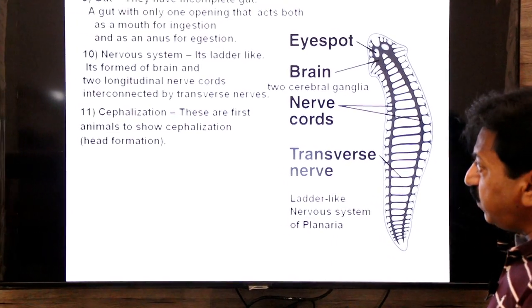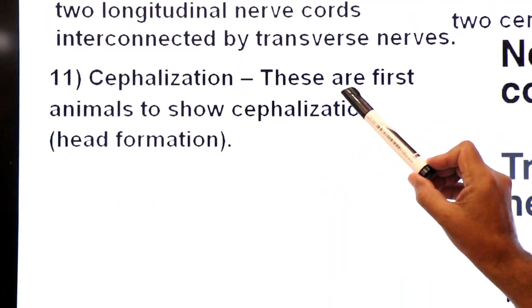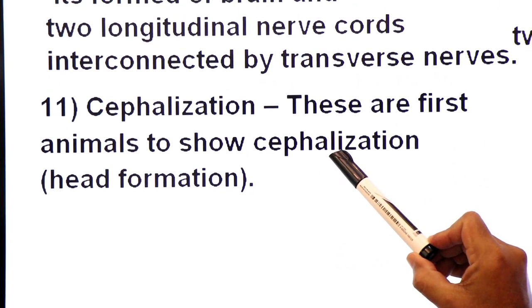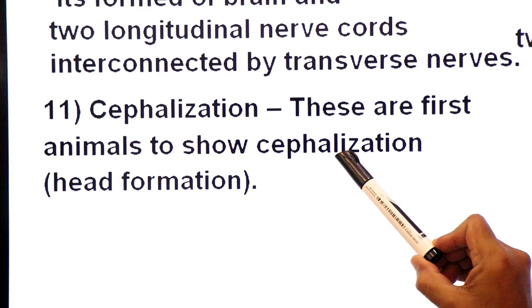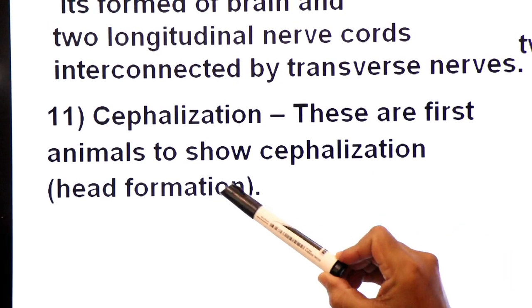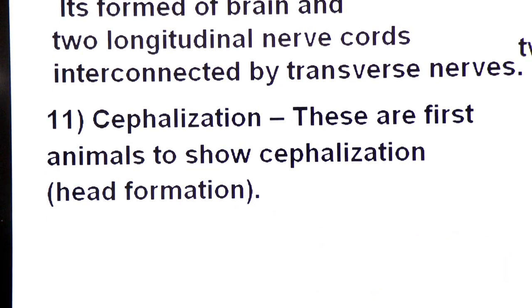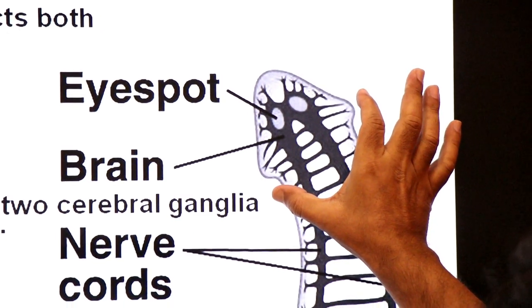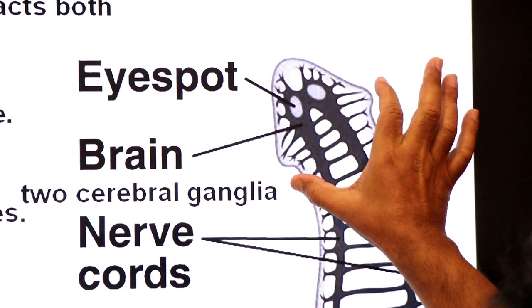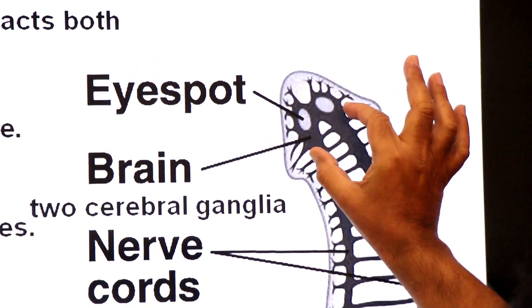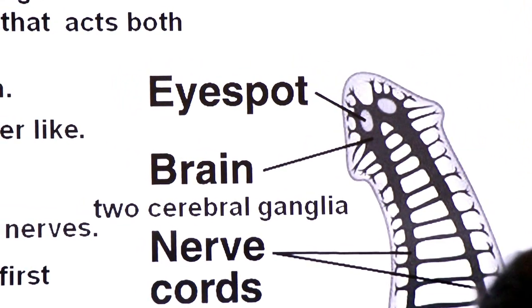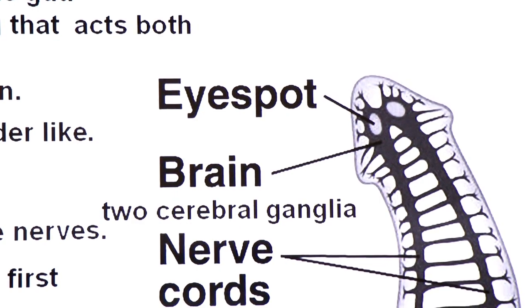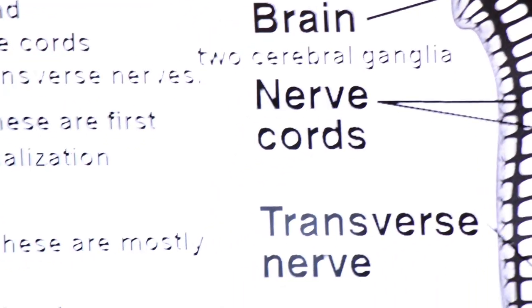Now cephalization. These are the first animals to show cephalization. Cephalization means formation of a head. You can see there is a head region, and in the head region the brain is present.